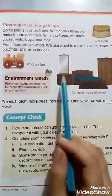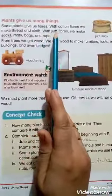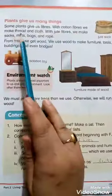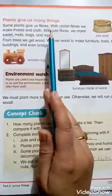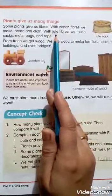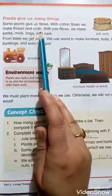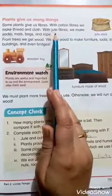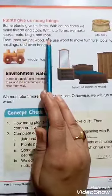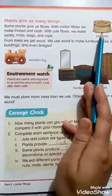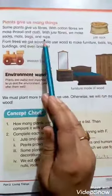Plants give us many things. Some plants give us fibers. With cotton fibers we make thread and clothes. We have different types of fibers: cotton fibers and jute fibers. From cotton fibers we make thread and clothes. And with jute fibers we make sacks, mats, bags and ropes.